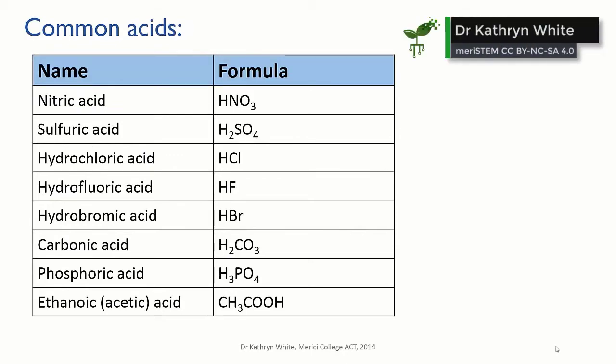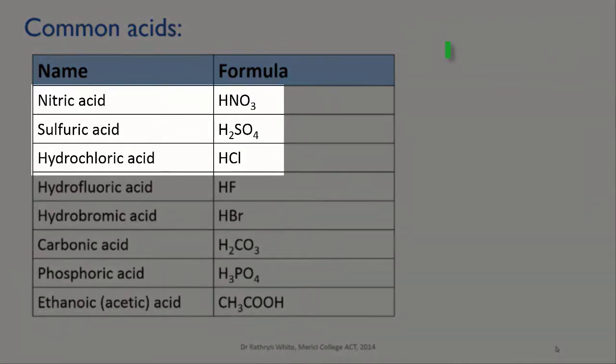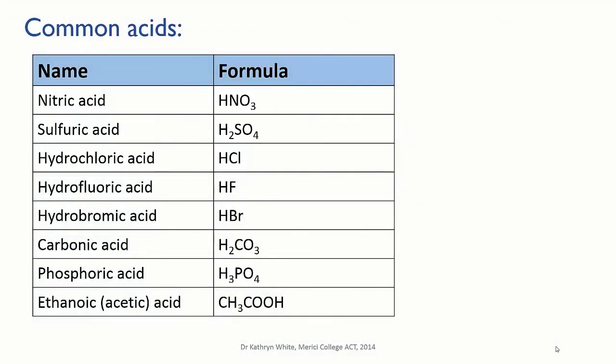And here's a list of the acids that will also appear from time to time. The first three are the most important: nitric acid, sulfuric acid, and hydrochloric acid, because you're going to come across them in the lab over and over again.